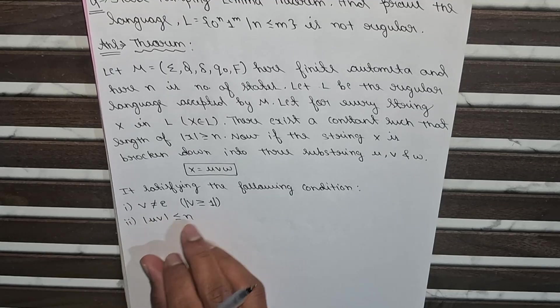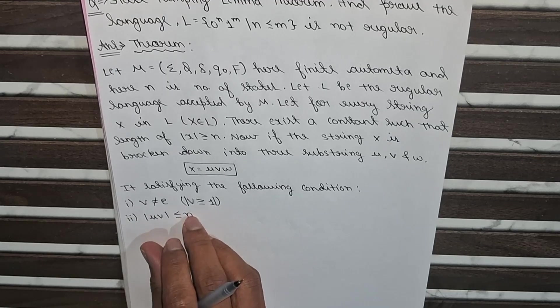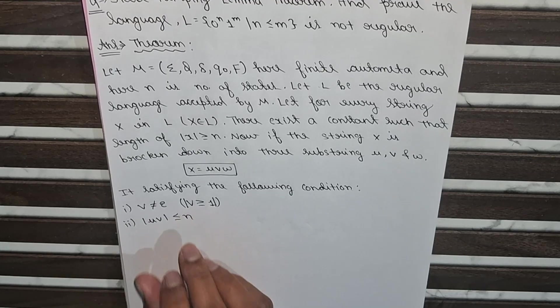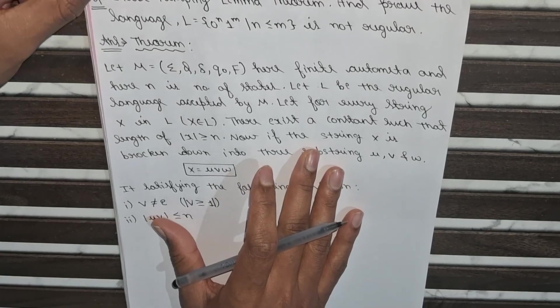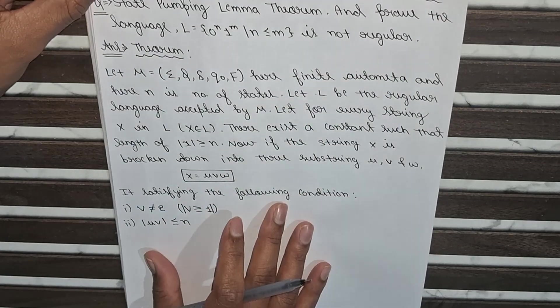And second condition is u, v is less than or equal to n. So let's get started. So now we will prove the language for better understanding.